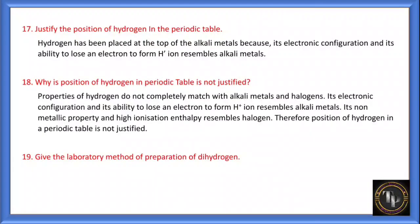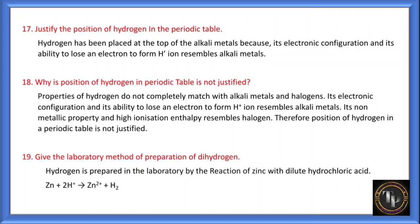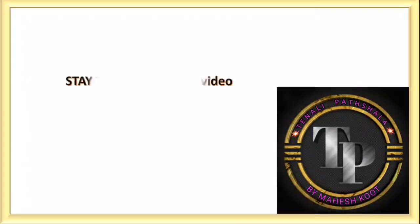Give the laboratory method of preparation of dihydrogen. Dihydrogen can be prepared by passing any dilute acid (H2SO4 or HCl) through zinc metal, producing H2 gas.